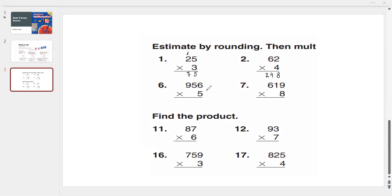Another example: 956 times 5. 5 times 6 is 30: write 0, and 3 goes up. Then 5 times 5 is 25, plus 3 is 28: write 8, and 2 goes up. 5 times 9 is 45, plus 2 is 47. The answer is 4,780.